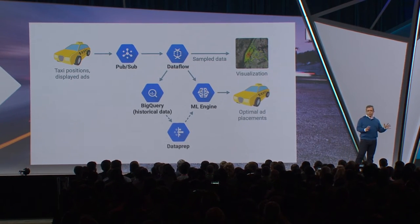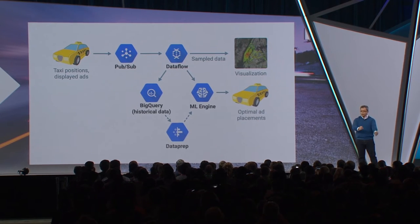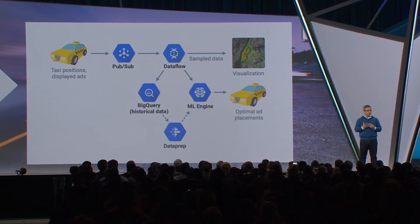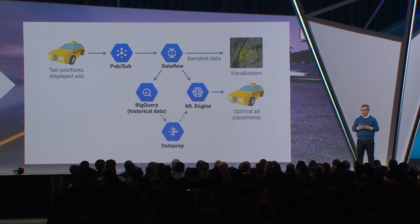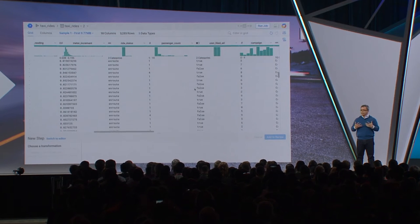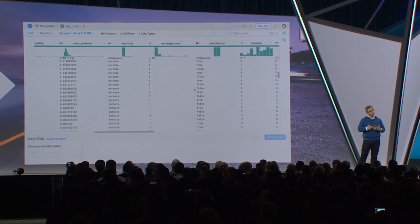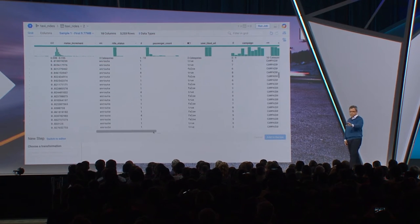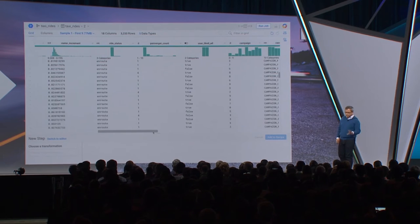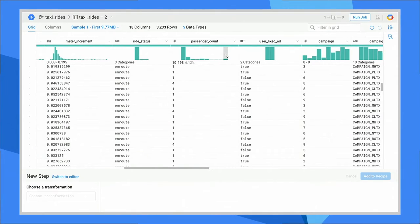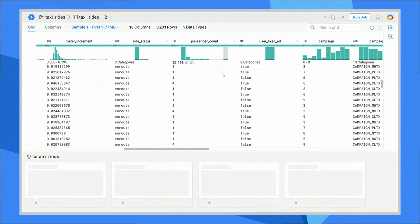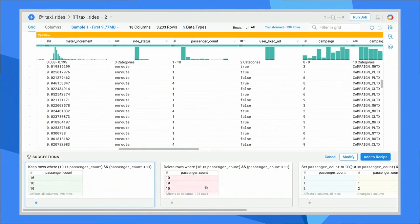First, we're going to use Dataprep to take all that historical data, clean it up, make sure it's ready to use, and then we're going to use it with ML Engine. So this is Dataprep. The first thing to notice is that across the top, Dataprep has automatically inferred the schema from the table — I didn't have to tell it that.